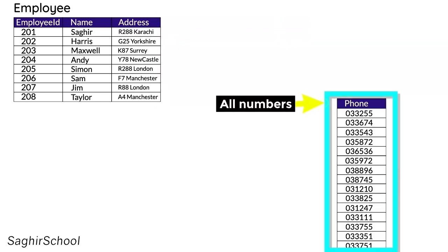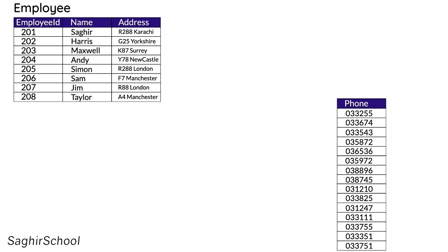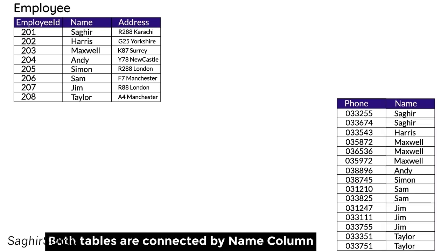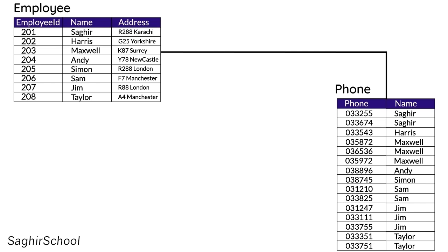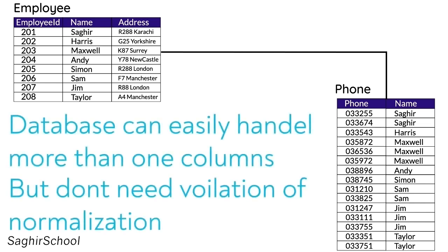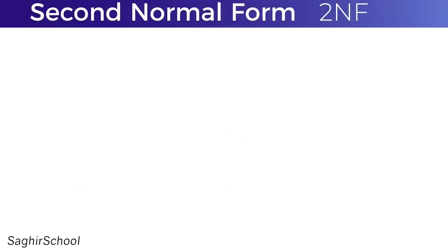The solution is to take out the part causing the problem — the phone numbers — and create a separate table for them, connecting them with the relevant value, then join both tables. Now it's in First Normal Form. The number of tables has increased from one to two, but there are no repeating values or repeating columns. A database can easily handle more than one table, but it cannot handle repeating values or columns.